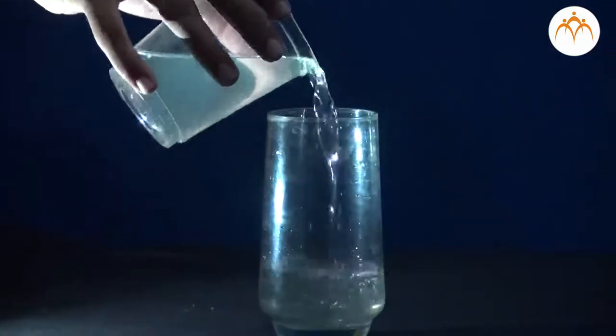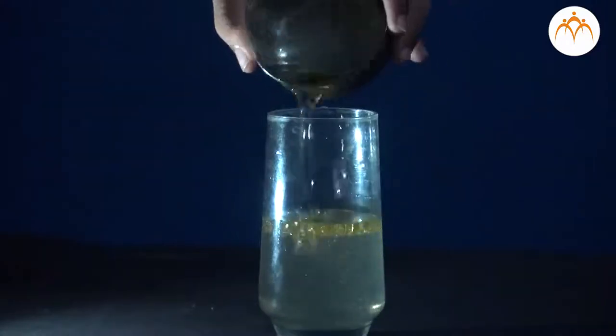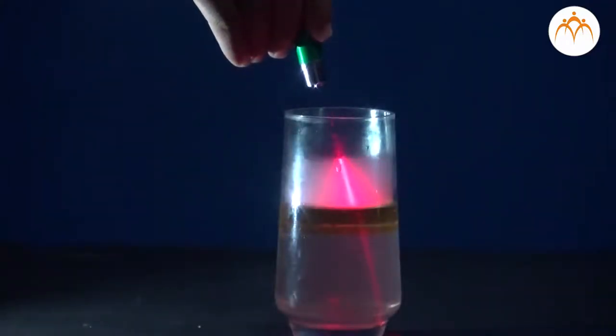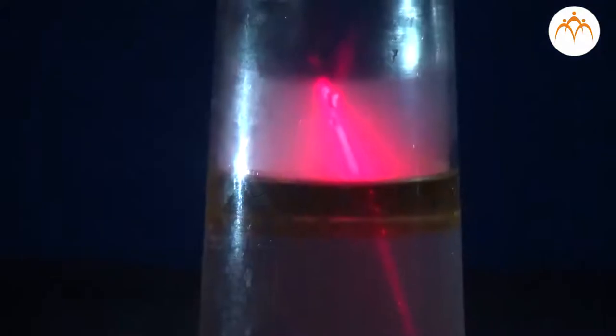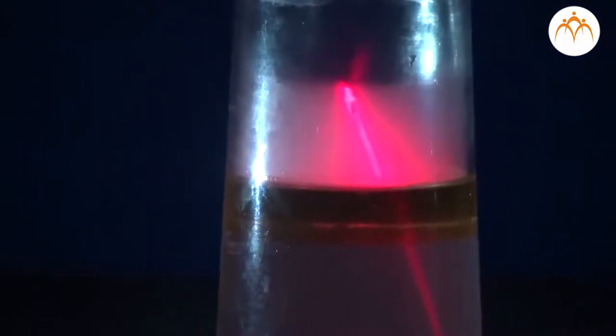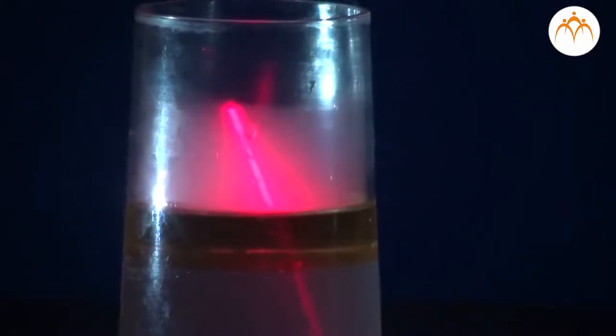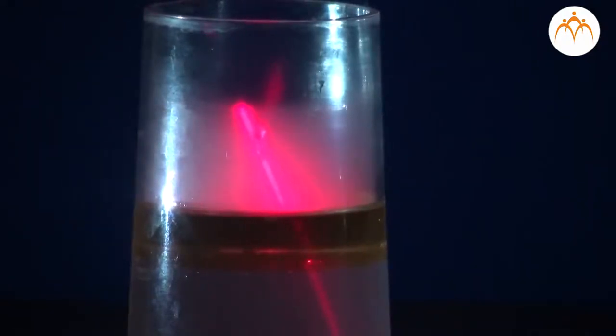Let us now try adding oil into the bottle such that it forms three separate layers. Now when you shine the laser, you will see that it bends at each boundary. Observe closely how the light ray bends at each of these intersections. Do you see any pattern? Let us come back to this in a later video.